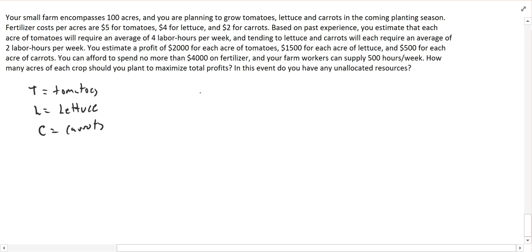I have a total of 100 acres to work with, so T plus L plus C has to be less than or equal to 100. I have up to 100 acres. I don't necessarily have to plant all of them. I also have my fertilizer costs, so it's $5 per acre for tomatoes.